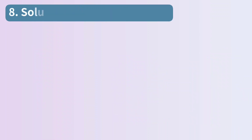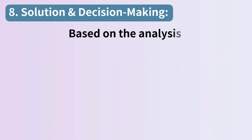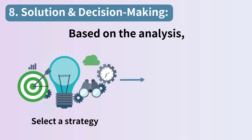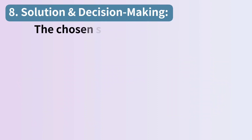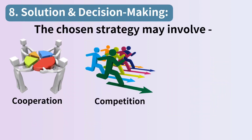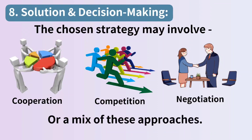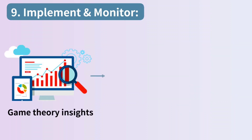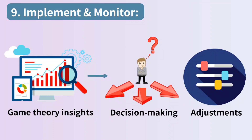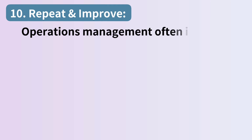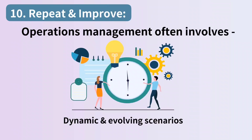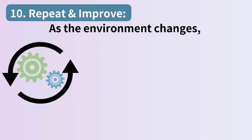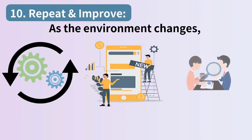Step 8: solution and decision-making. Based on the analysis, select a strategy or a combination of strategies that best aligns with the organization's objectives. The chosen strategy may involve cooperation, competition, negotiation, or a mix of these approaches. Step 9: implement and monitor. Put the chosen strategy into action and closely monitor the results. Game theory insights can guide ongoing decision-making and adjustments as necessary. Step 10: repeat and improve. Operations management often involves dynamic and evolving scenarios. As the environment changes, you may need to repeat through the game theory process, updating strategies and analyzing new interactions.